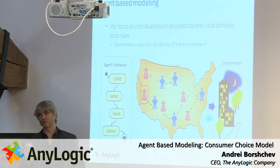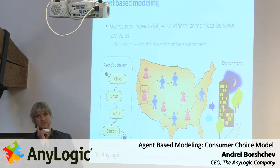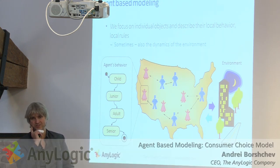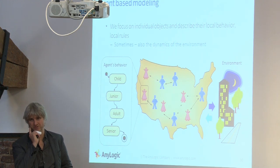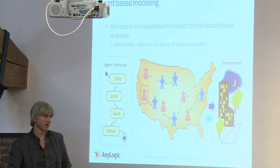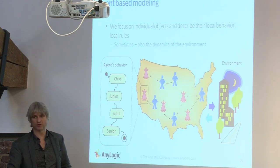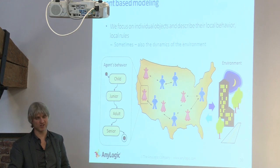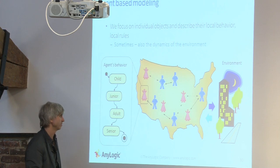Agent-based modeling is a newer thing. Until around 2002, people were not seriously doing any agent-based modeling. The reasons are that the technology wasn't ready — computers were slow, and agent-based modeling tends to consume a lot of CPU power and memory.